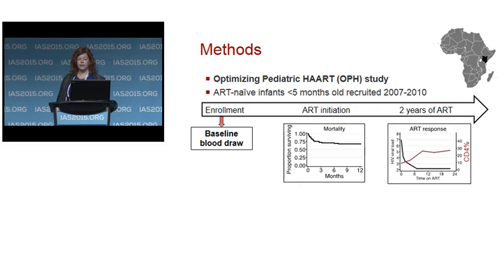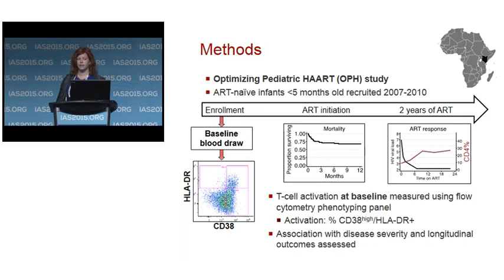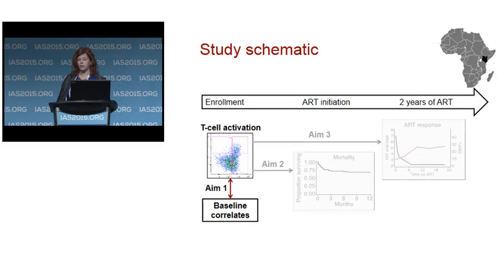The first aim was to quantify T cell activation in the cohort and identify baseline correlates. 75 infants had samples available. Their median age was four months. They were immunocompromised with a median CD4 of 19% and very high viral loads at a median of 6.6 log. Over half were WHO disease stage three or four, and were stunted or underweight. Of the 75 infants, 59 initiated ART, while 12 died before ART could be initiated and four were lost to follow-up.